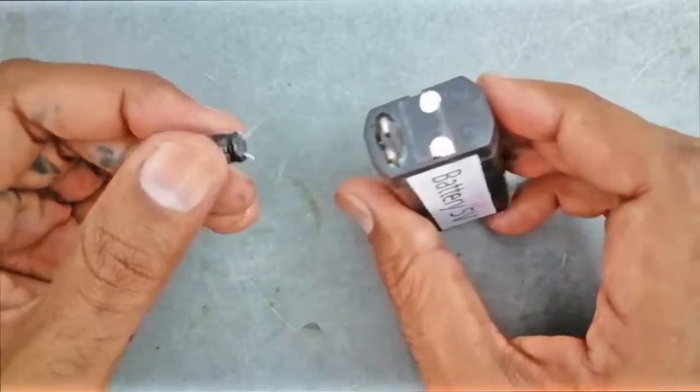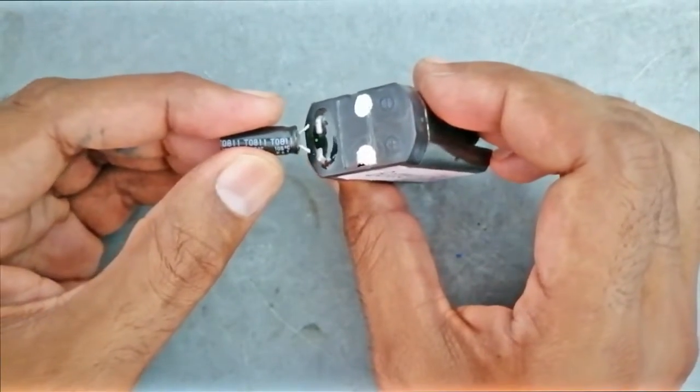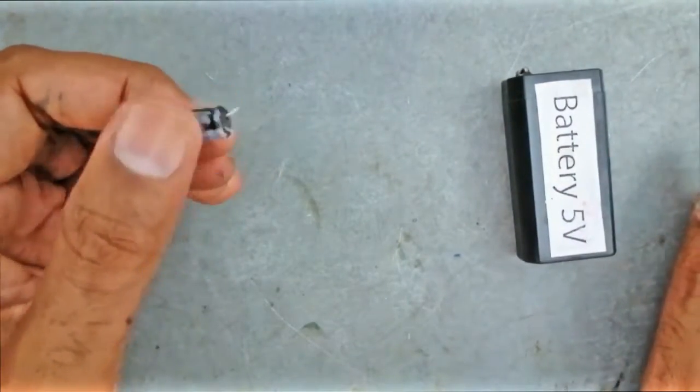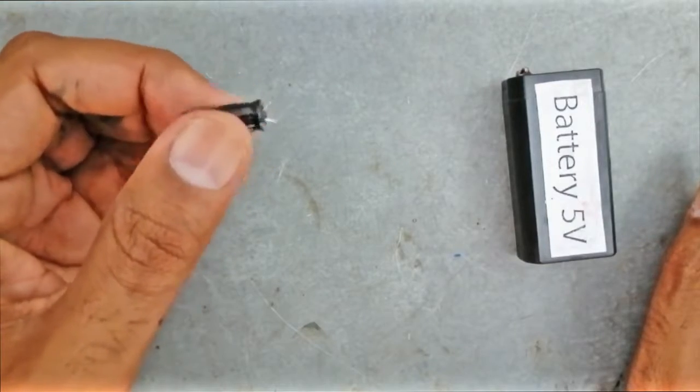Let's attach our capacitor with our 5V battery for a second. Let's separate them. After that we will attach it with our lead bulb again. Experience what happened.